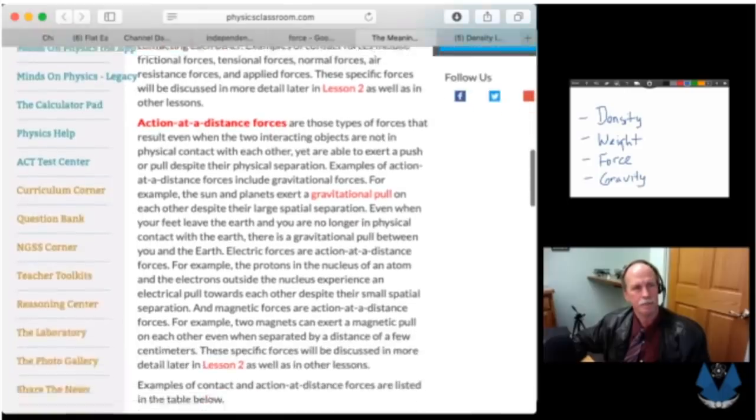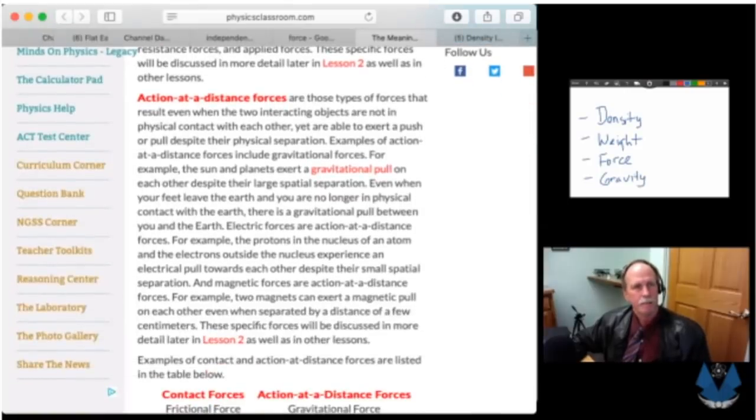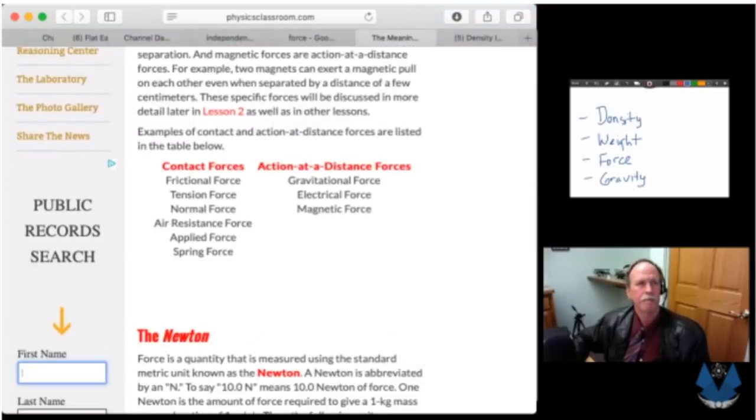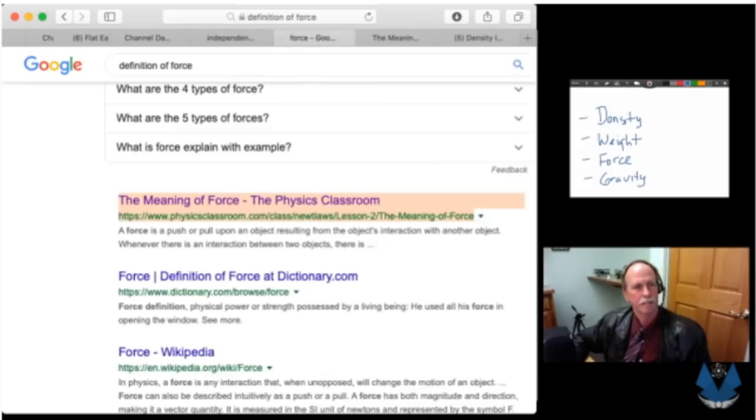Action at a distance forces are the type of forces that result even when two interacting objects are not in physical contact with each other. Yet they are able to exert a push or pull despite their physical separations. Examples of action at a distance forces include gravitational force. Even when your feet leave the earth and you are no longer in physical contact with the earth, there is gravitational pull between you and the earth. Electric forces, magnetic forces, there's a little outline of them.